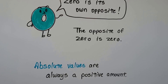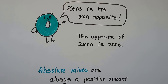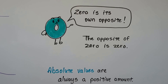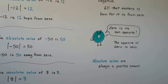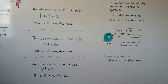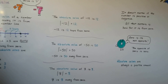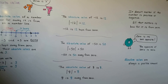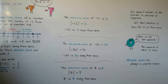Absolute values are always a positive amount, because you're telling how far it is from that zero point. It's always a positive amount. If you lived five miles from school and someone said how far do you live from school, you wouldn't say negative five — you'd say I live five miles from school. So it's always going to be a positive amount because it's showing the distance from zero. And distance is always positive.